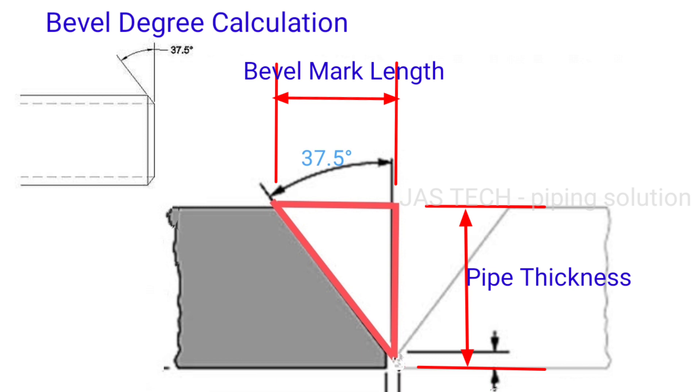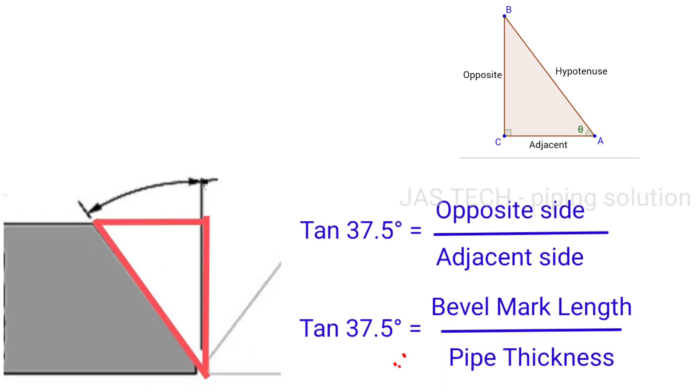One side is pipe thickness, another side is bevel mark length, the degree is 37.5 degrees. So the calculation: tan 37.5 degrees equals